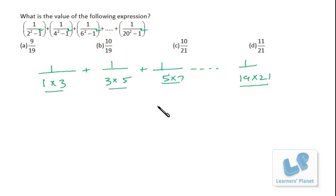So divide and multiply by 2. It's 1 upon 2: 2 upon 1 into 3 plus 2 upon 3 into 5 plus 2 upon 5 into 7, 2 upon 19 into 21.